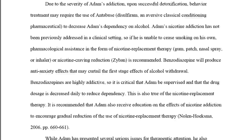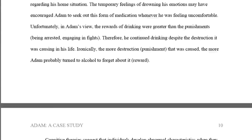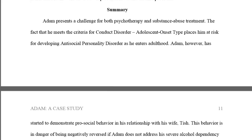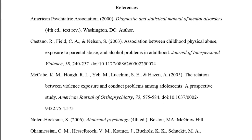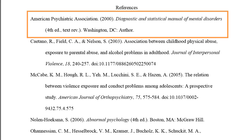The in-text citation refers to the full reference citation that you will find in alphabetical order on the last page. Here, you see the full and correct way to cite the DSM-IV revised text. Note that when the publishing company is the same as the author, the word 'author' is used in place of the publishing company.